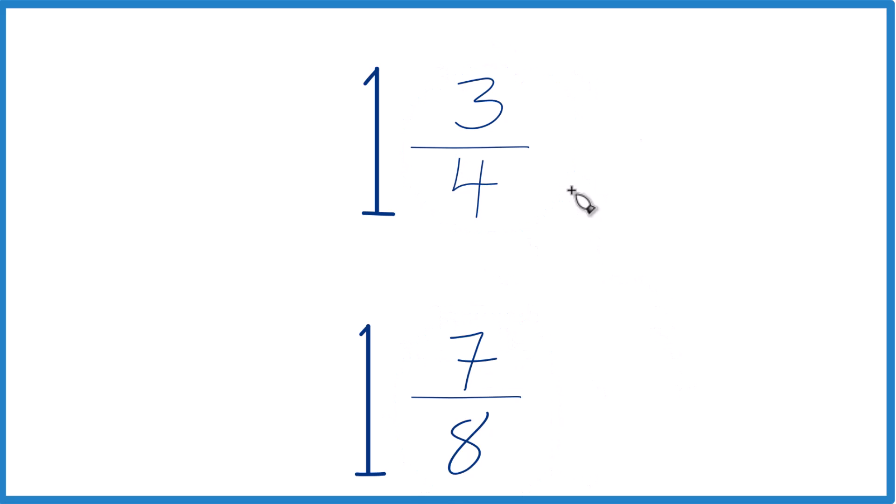If we had a common denominator—right now we have 4 and 8, but if we had the same denominator—we could just compare the numerators and we'd know whether 1 3/4 is greater than, less than, or equal to 1 7/8.